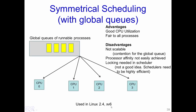In the symmetrical scheduling scheme with global queues, there is exactly one queue of ready processes shared among all processors. The schedulers in each CPU look up this global queue to decide which process to run next. For instance, CPU 0 looks up the global queue and decides on a particular process to run next; that process then changes from the ready state to the running state. The advantage of this scheme is good CPU utilization and fairness to all processes.